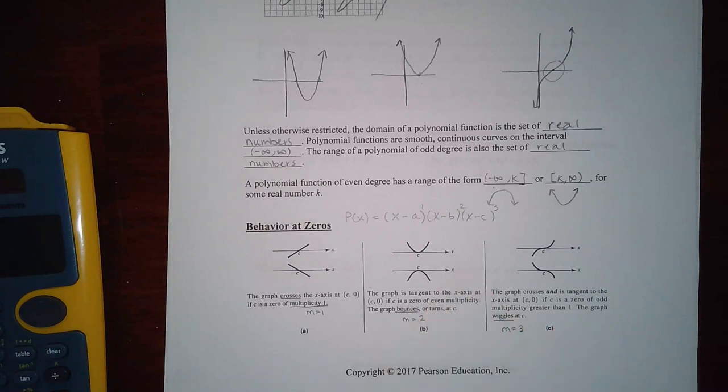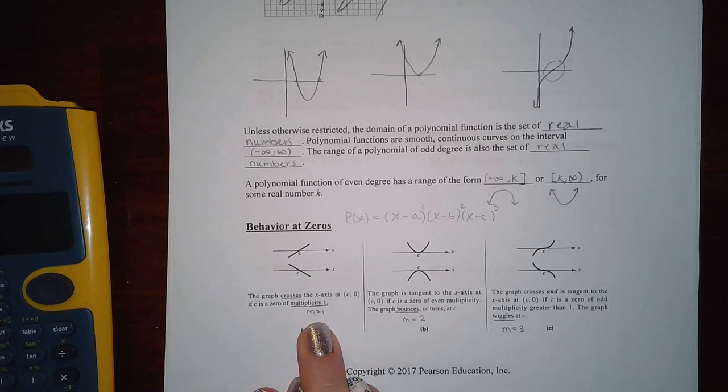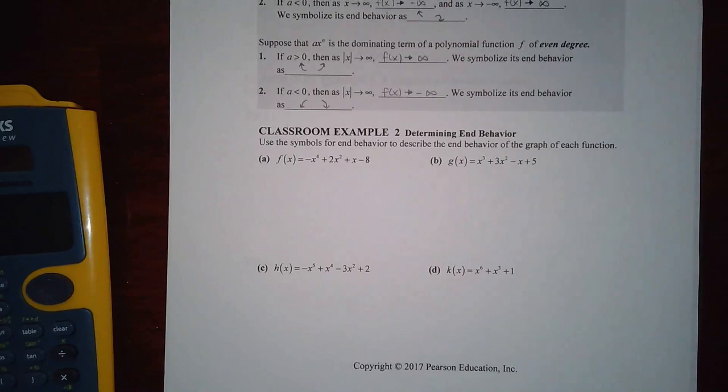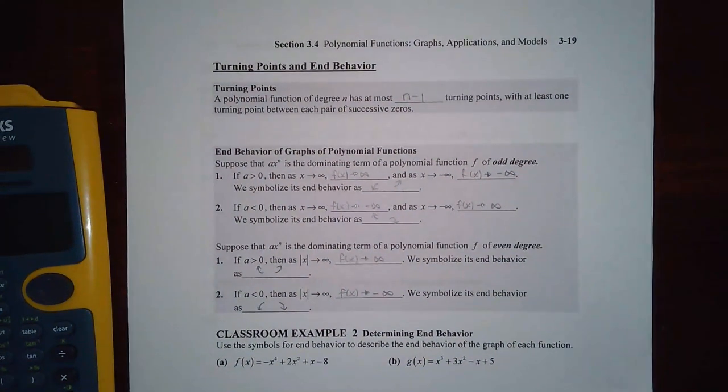And then here the graph crosses and is tangent to this if it's odd multiplicity greater than one, meaning if it's three or five or seven and so forth, okay? And so what's the lowest of all of those? It would be three. Now I don't think that we're going to get into zeros that have multiplicities of four and five and six and seven. So for the most part, if you remember, crosses has multiplicity of one, bounces has multiplicity of two, and wiggles have multiplicity of three. You should be set as far as behavior at a zero.